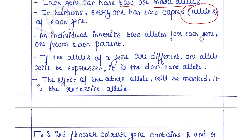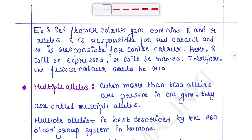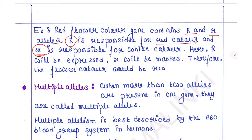If the alleles of a gene are different, one allele will be expressed — that is the dominant allele. The effect of the other allele will be masked — that is the recessive allele. For example, the red flower color gene contains capital R and small r alleles. Capital R is responsible for red color and small r is responsible for white color. Capital R will be expressed and small r will be masked, because capital R is the dominant allele and small r is the recessive allele. Therefore, the flower color would be red.